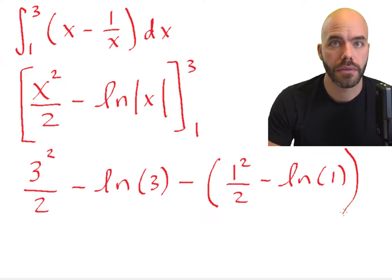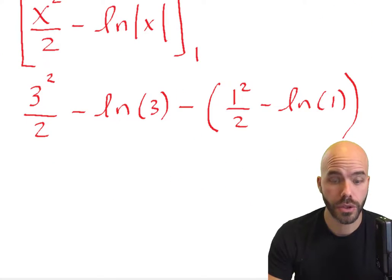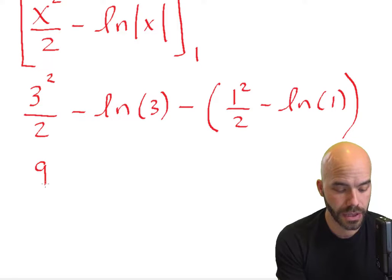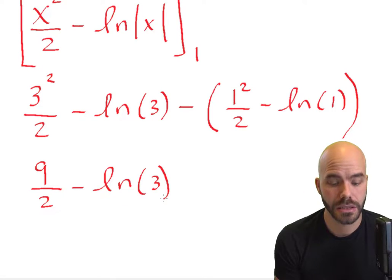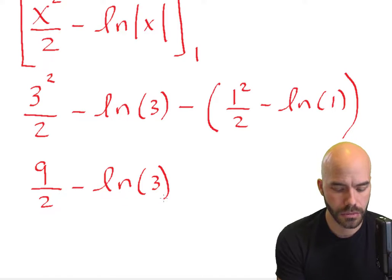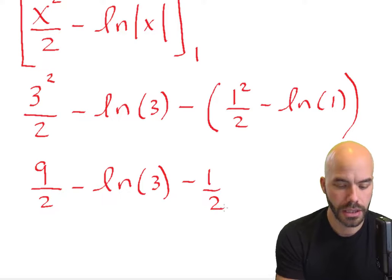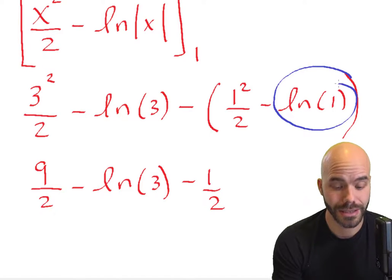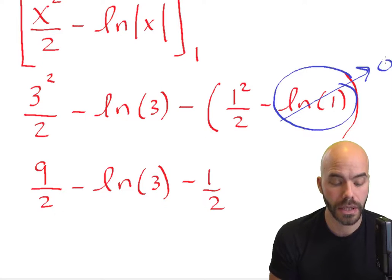All right, from here we just clean it up a little bit. 3 squared is 9, so we have 9 over 2 minus the natural log of 3 minus 1 squared is 1, so minus 1 half. And then the natural log of 1 is 0, so that gets wiped out.